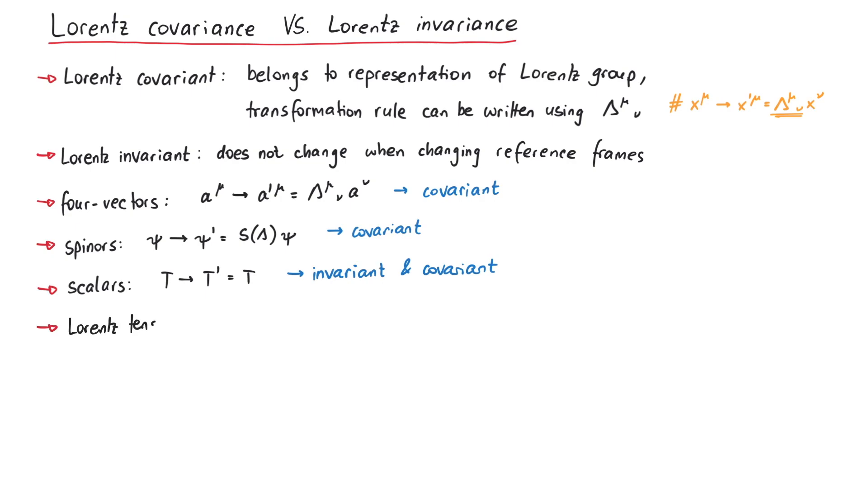In general, an arbitrary tensor with a certain amount of Lorentz indices is a Lorentz covariant quantity. For every Lorentz index, we get a transformation matrix lambda. Such tensors are usually called Lorentz tensors.